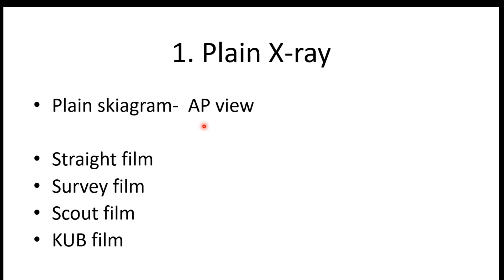After getting the X-ray, we have a radiological film in which we study different parts of the abdomen. This film is given different names. The first is a straight film. A straight film is taken in case of acute abdomen — when the patient comes to the emergency with intense pain in the abdomen — where we do not do any preparation; we straightforwardly perform the plain X-ray.